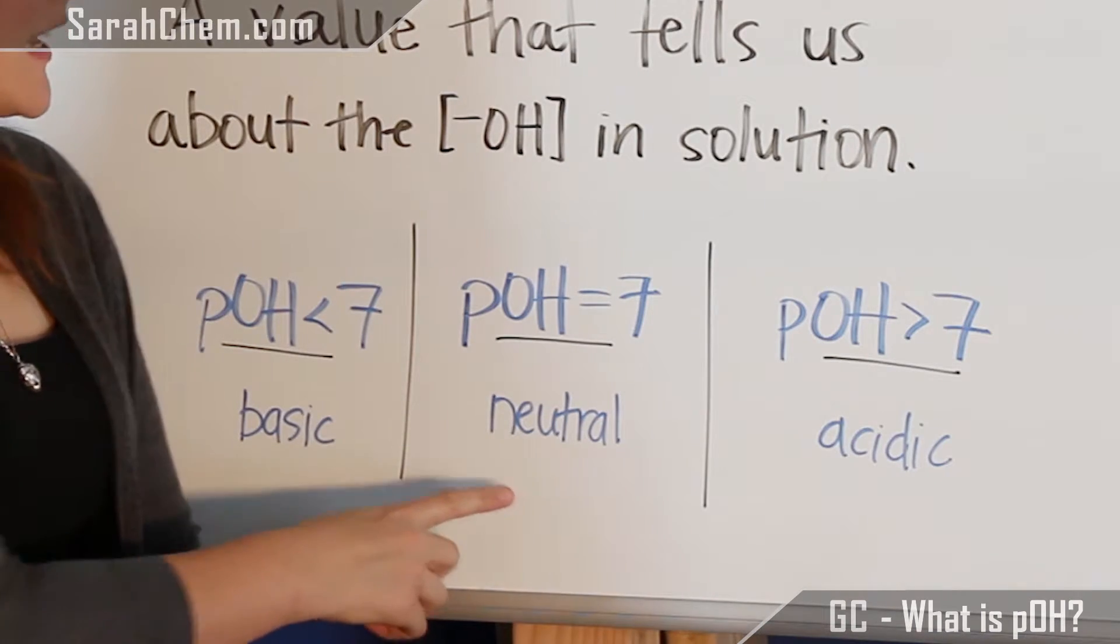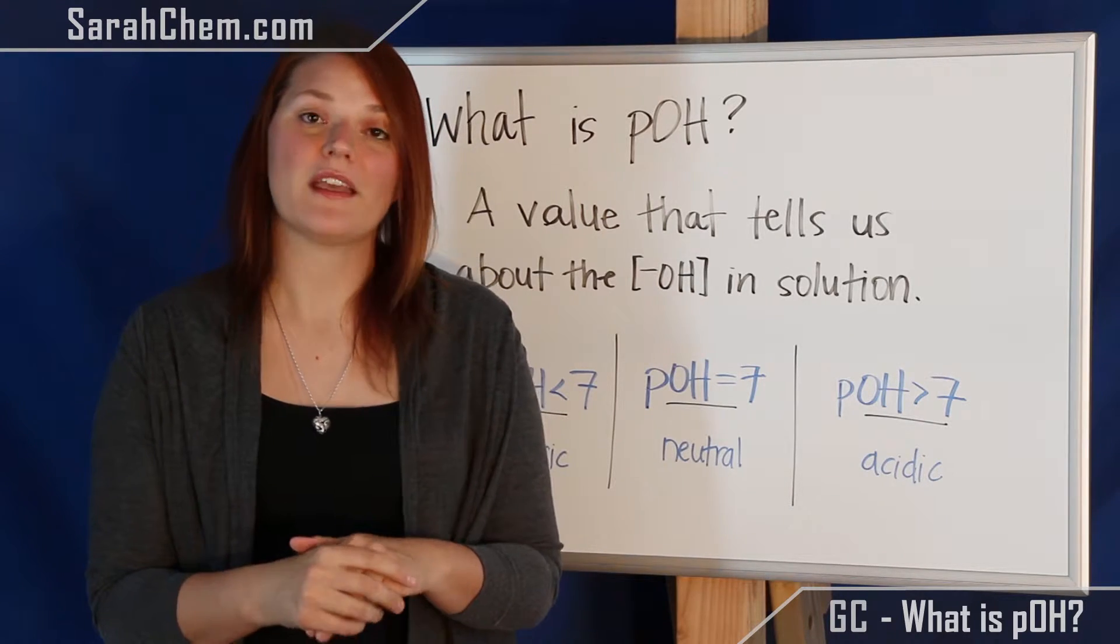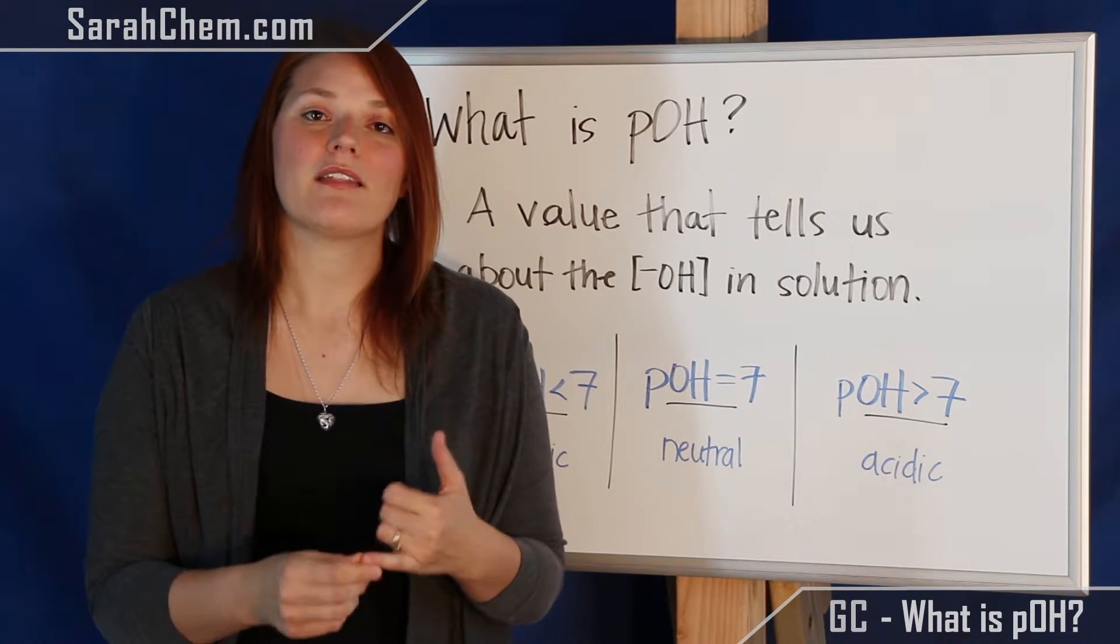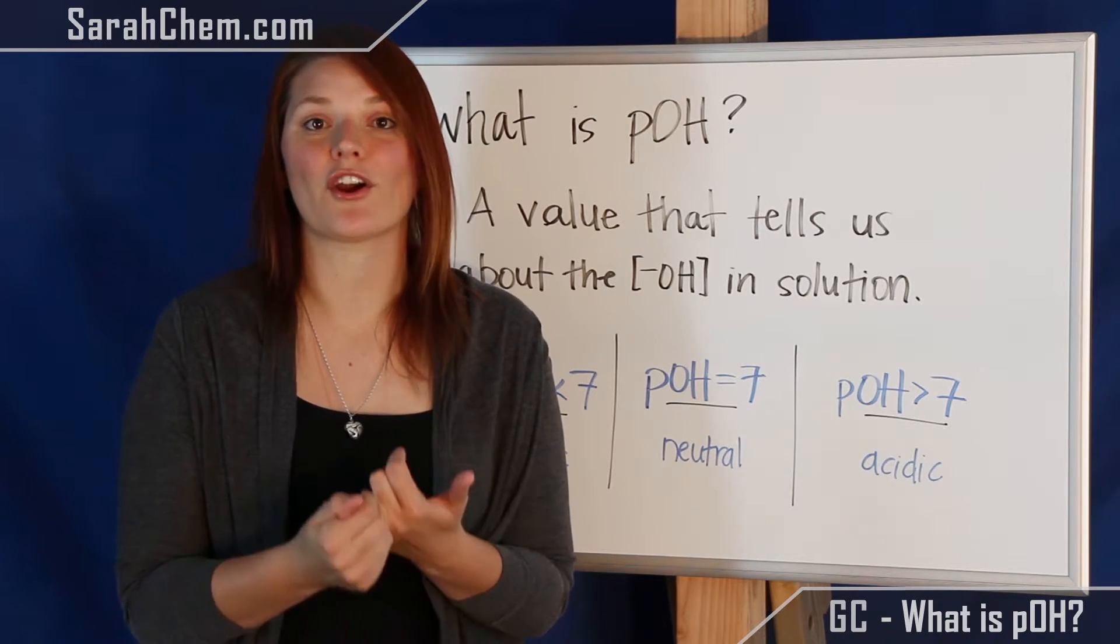If we have a pOH equal to 7, just like pH, that means we have a neutral solution. And when we have a neutral solution, that means that the hydroxide concentration and the H+ concentration are the same.